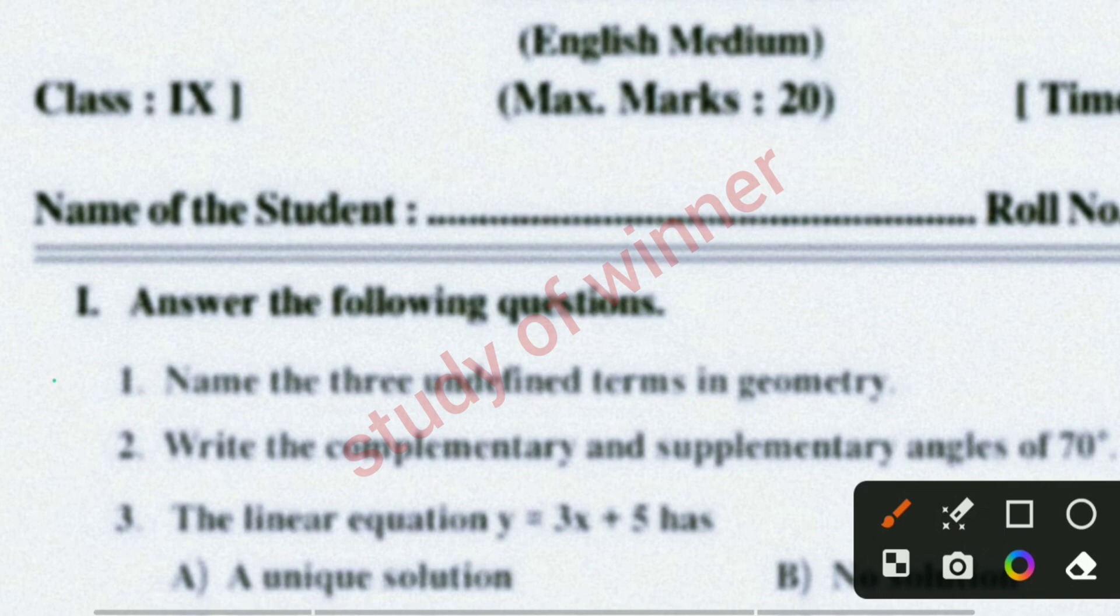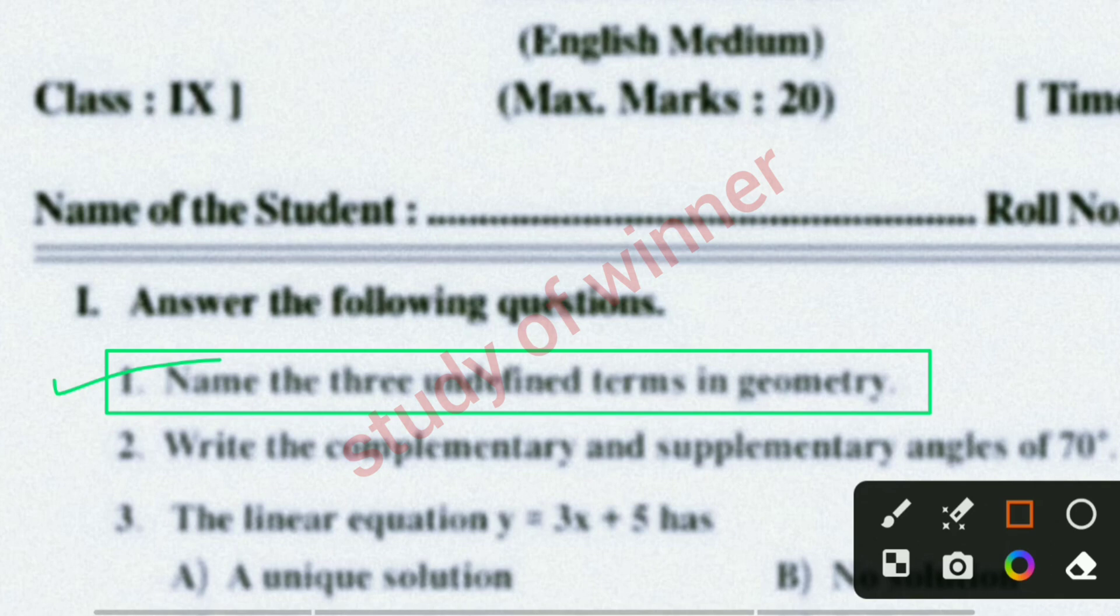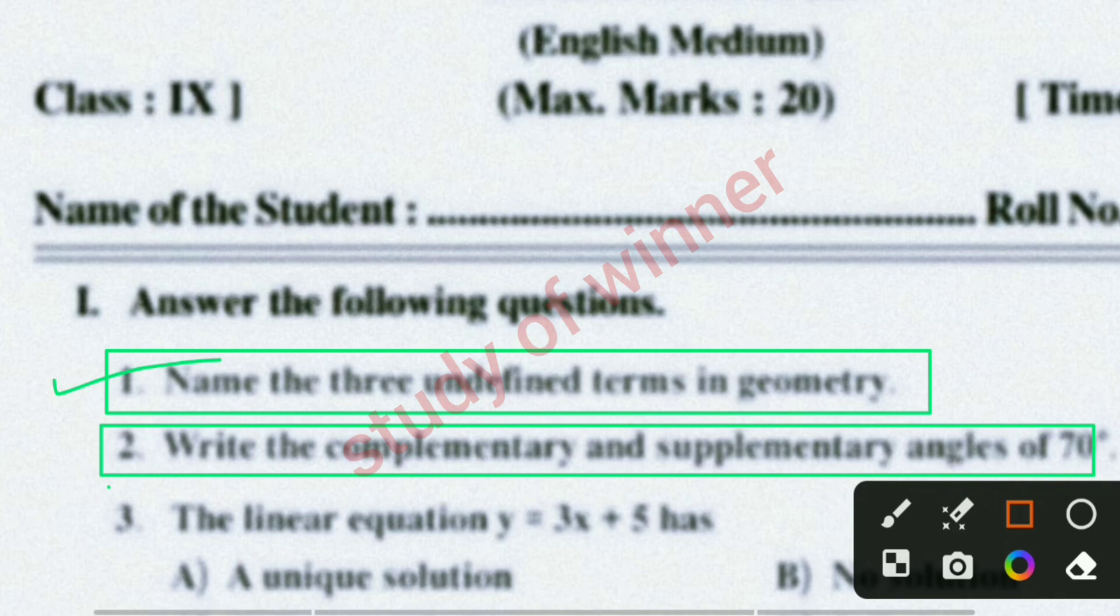Your first question - name three undefined terms in geometry. Your second question - write the complementary and supplementary angle of 70 degrees. And then your third question, the linear equation y = 3x + 5.